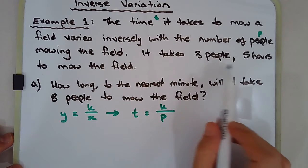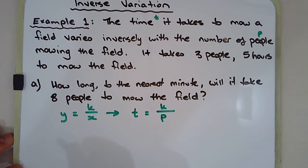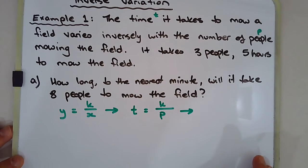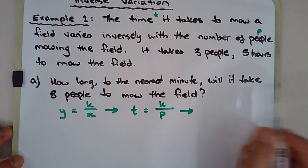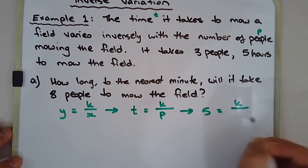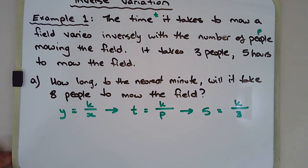Now we need some further information. We know that it takes three people five hours to mow the lawn. So moving on to the next little bit of working out, five hours is equal to K over the number of people. And this allows us then to find this very special value, this constant, this constant of variation.